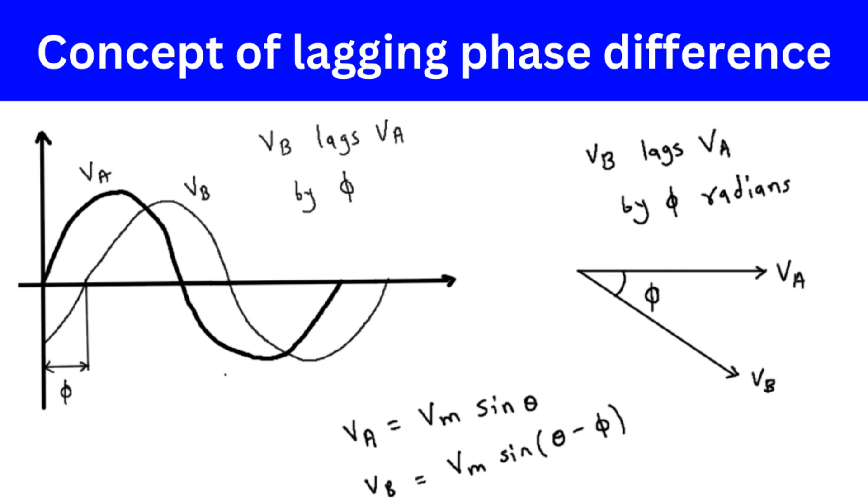A phasor diagram is a graphical representation of the amplitude and phase relationships between two or more sinusoidal signals.